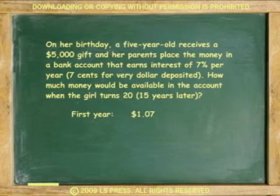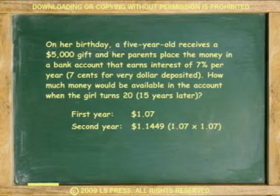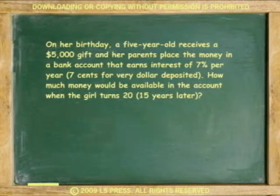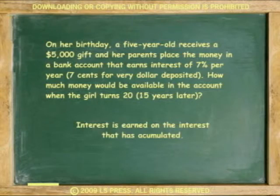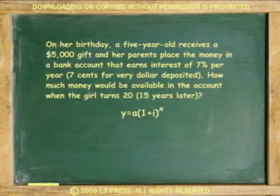After the first year, $1.00 would have grown to $1.07. After the second year, the $1.07 would have grown to $1.15. And after the third year, to $1.23, and so on. This problem fits the exponential growth pattern because the more interest is accumulated, the higher the interest earned. In other words, the money grows rapidly by compounding on the interest already earned. The exponential equation would be y equals a times 1 plus i to the x.